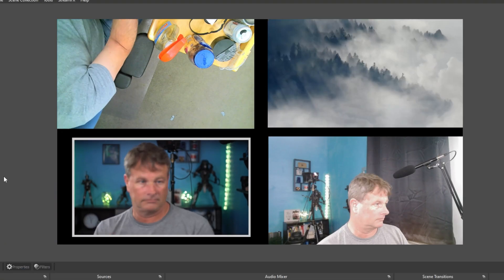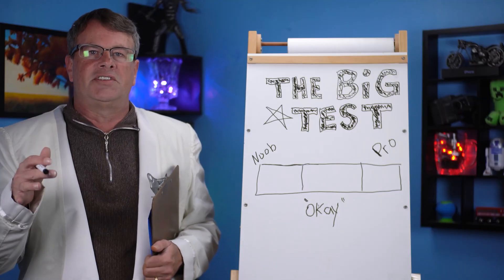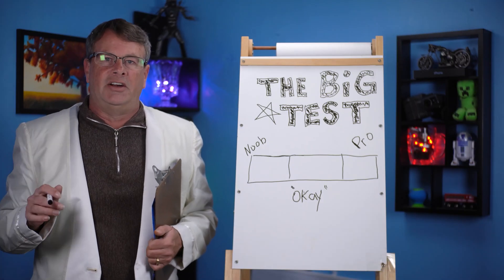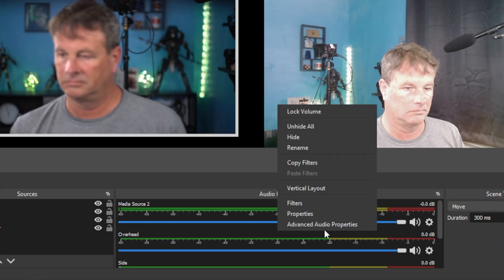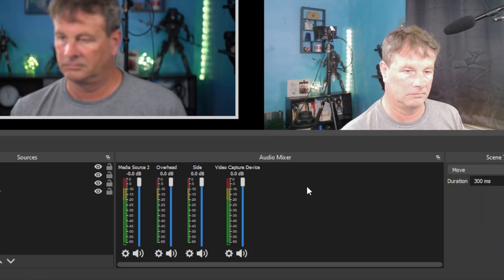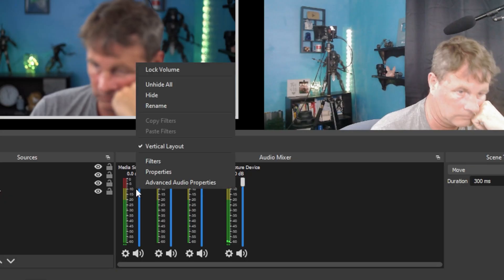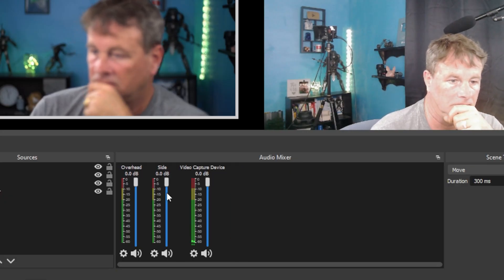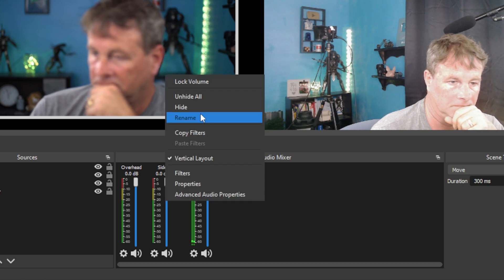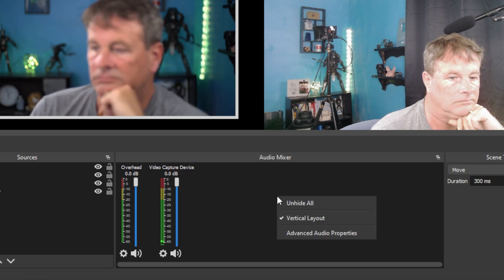And your audio mixer can be just as messy as your source list, and some of it is just clutter. But you can make the audio easier to read by right-clicking and selecting Vertical Layout. You can also hide audio that you don't need to see by right-clicking on the ones that you don't want and selecting Hide. You can unhide anything again by right-clicking and selecting Unhide All.